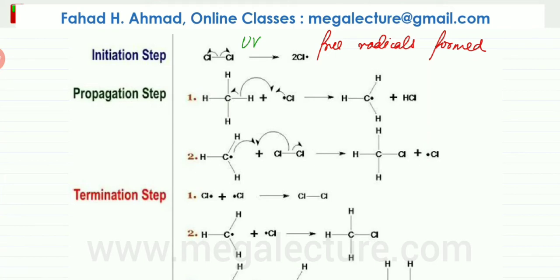These radicals keep on attacking other molecules, trying to complete their bonds. And this is what happens in propagation step. One radical comes in, takes away atoms from another molecule to complete its bonds, and the other molecule becomes a radical.